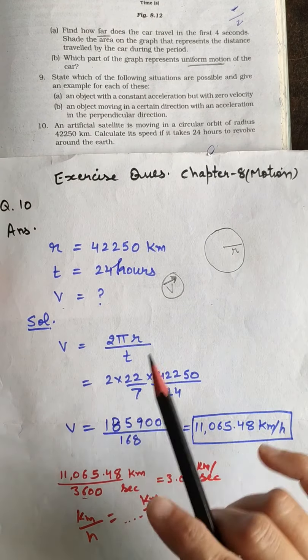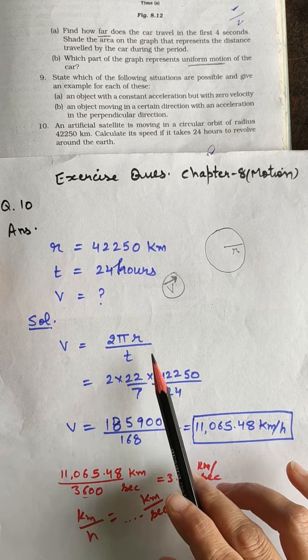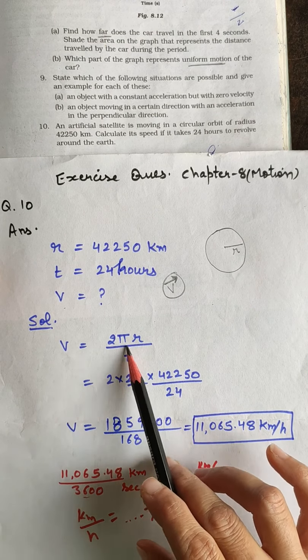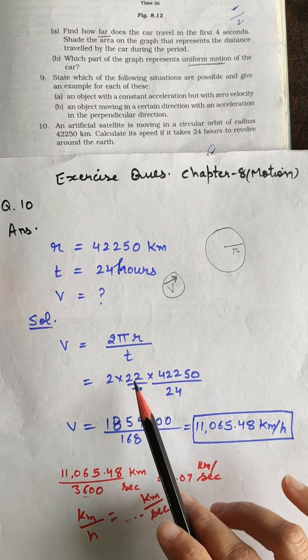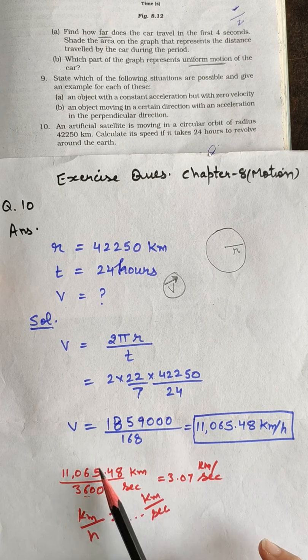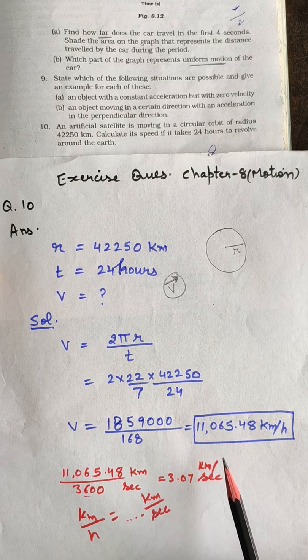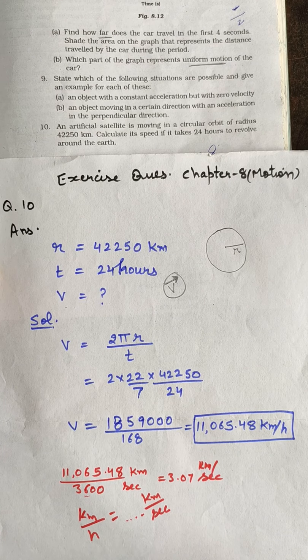For solution we will write the formula that is V equals 2πR by T. That is circumference divided by time. We will put the values in this formula and finally after calculating we will get 11,065.48 km per hour.